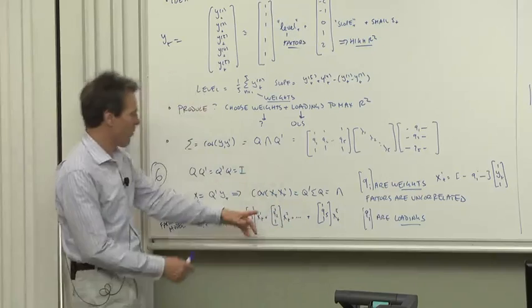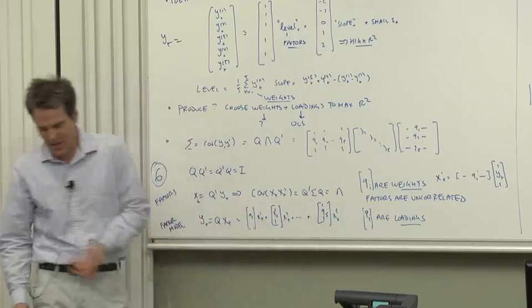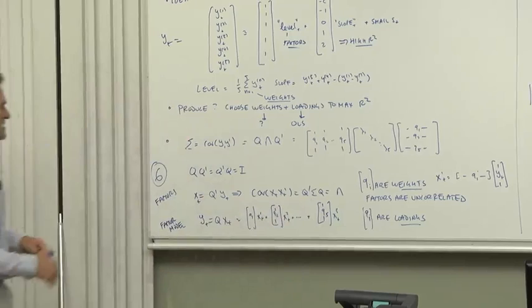Let's write out that operation. That means the first column of q times the first x, the second column of q times the second x. Oh, right? The columns of q are now also acting as the loadings that you recover the yields from the factors with.